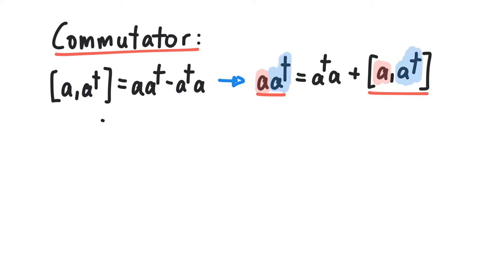If the commutator is zero, we can just switch the expressions. An example of this would be the multiplication of two numbers.